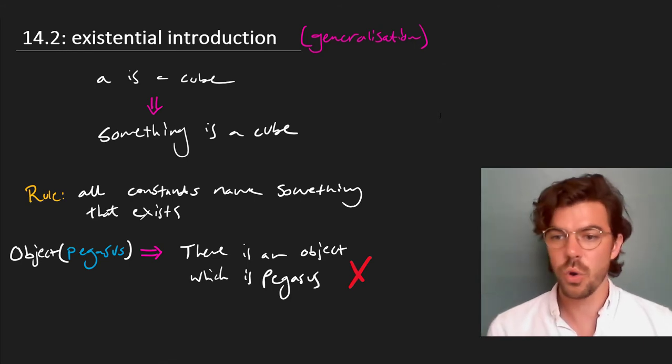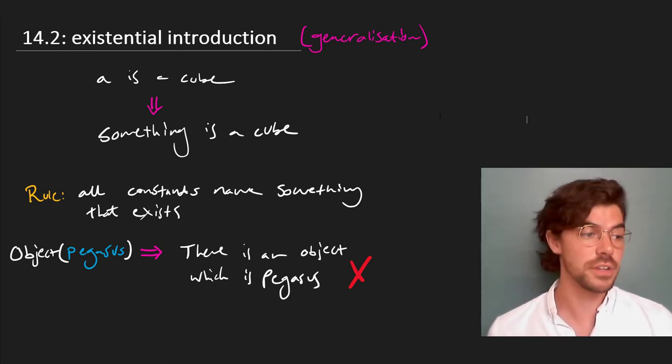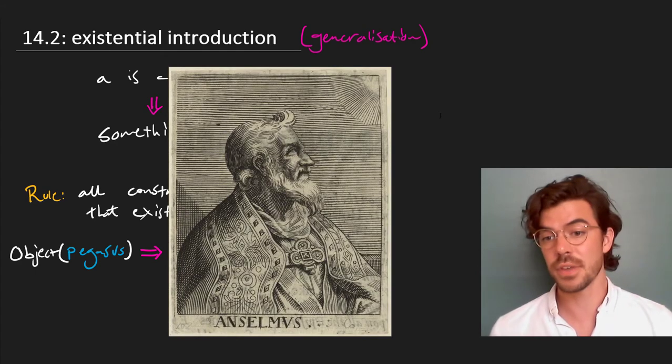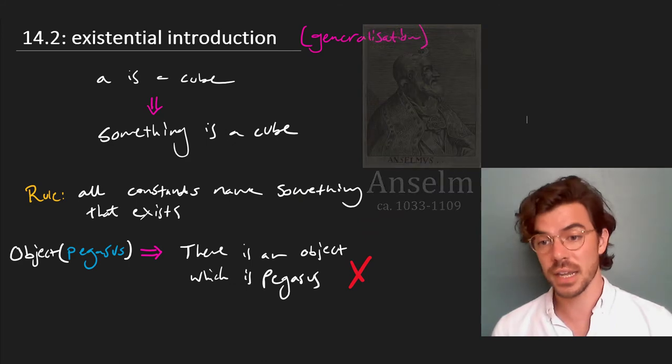And in fact, there are whole metaphysical systems and even proofs of the existence of God, for instance, the one produced by Anselm of Canterbury, which seemed to turn on the question of whether or not existence is a predicate.